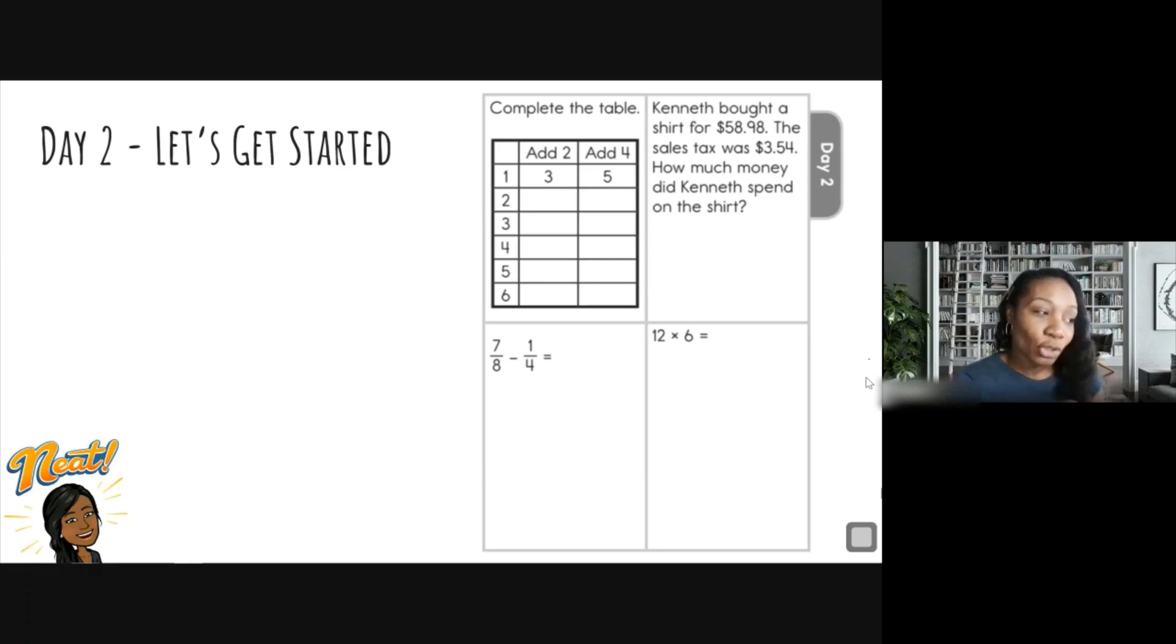If I add two to one, I get three, which is what they got. And then I see one, and it's telling me to add four. So one plus four gave me five. So now I see a pattern. I see what they're doing. So let's go in and we are going to complete this table.